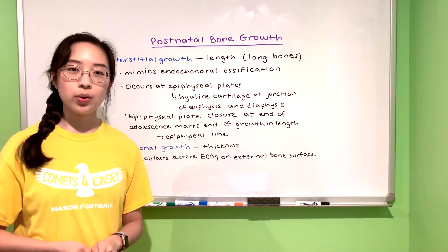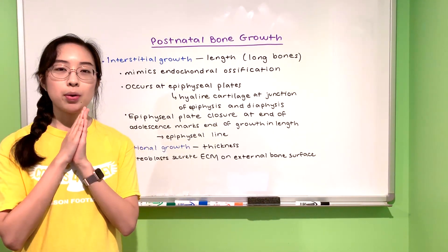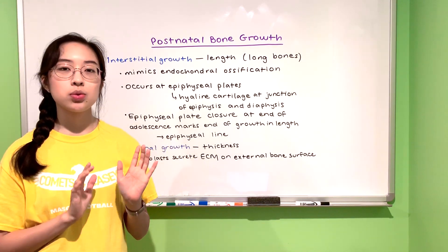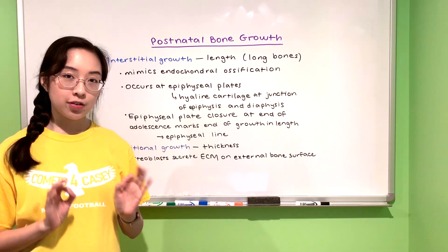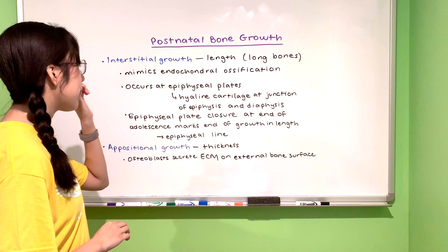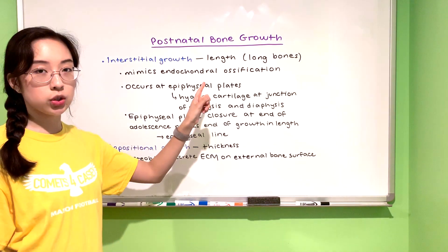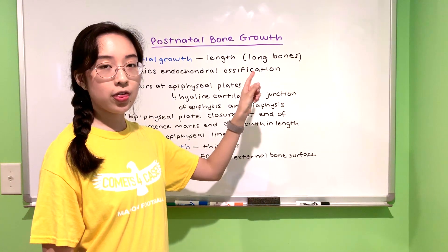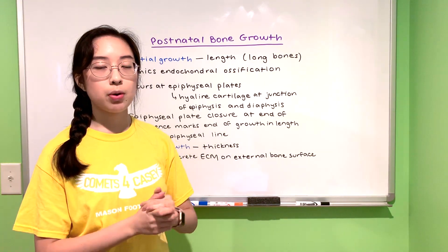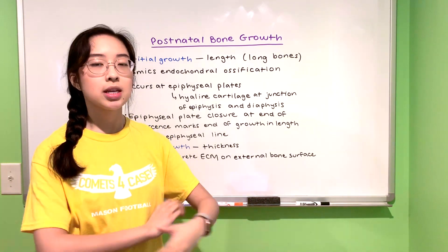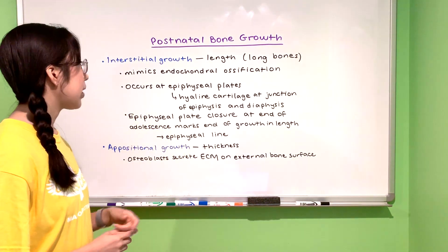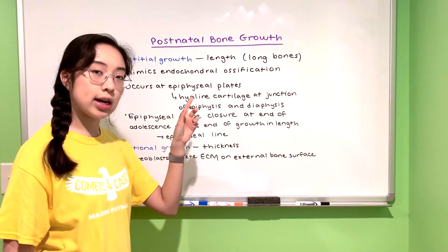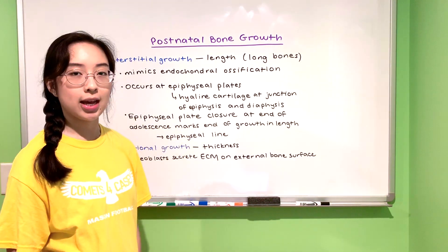There are two types of bone growth. Your bones need to grow longer and they need to grow thicker, and these two actually use two different mechanisms. The first type is called interstitial growth and this is the growth in length of long bones — the bones in your arms and your legs — and this is very similar to the endochondral ossification that we talked about yesterday.